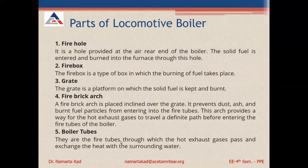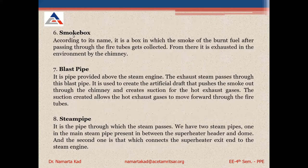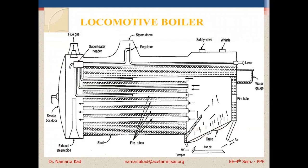The boiler tubes are fire tubes through which hot exhaust gases pass and exchange heat with the surrounding water, converting it into steam. The smoke box collects smoke of the burnt fuel after it passes through the fire tubes; from there, it is exhausted into the environment by the chimney. Some hot gases are also exhausted through the upper steam exhaust pipe and from the lower portion as well.